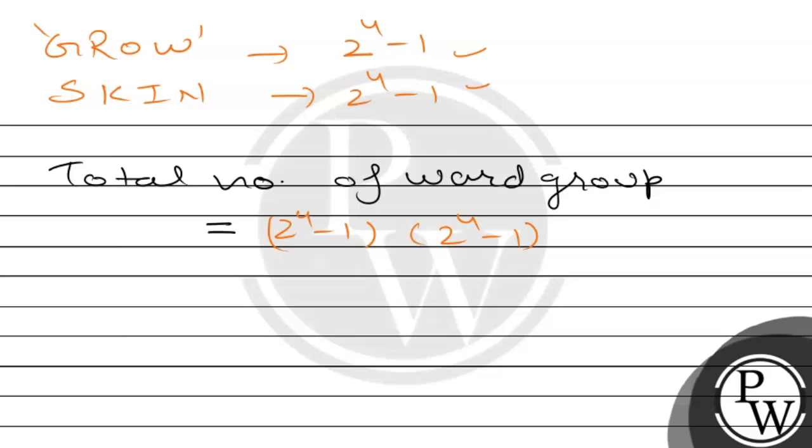We have (2^4 - 1) for each word. That gives us (2^4 - 1) × (2^4 - 1) × (2^4 - 1) = 15 × 15 × 15 = 15^3.